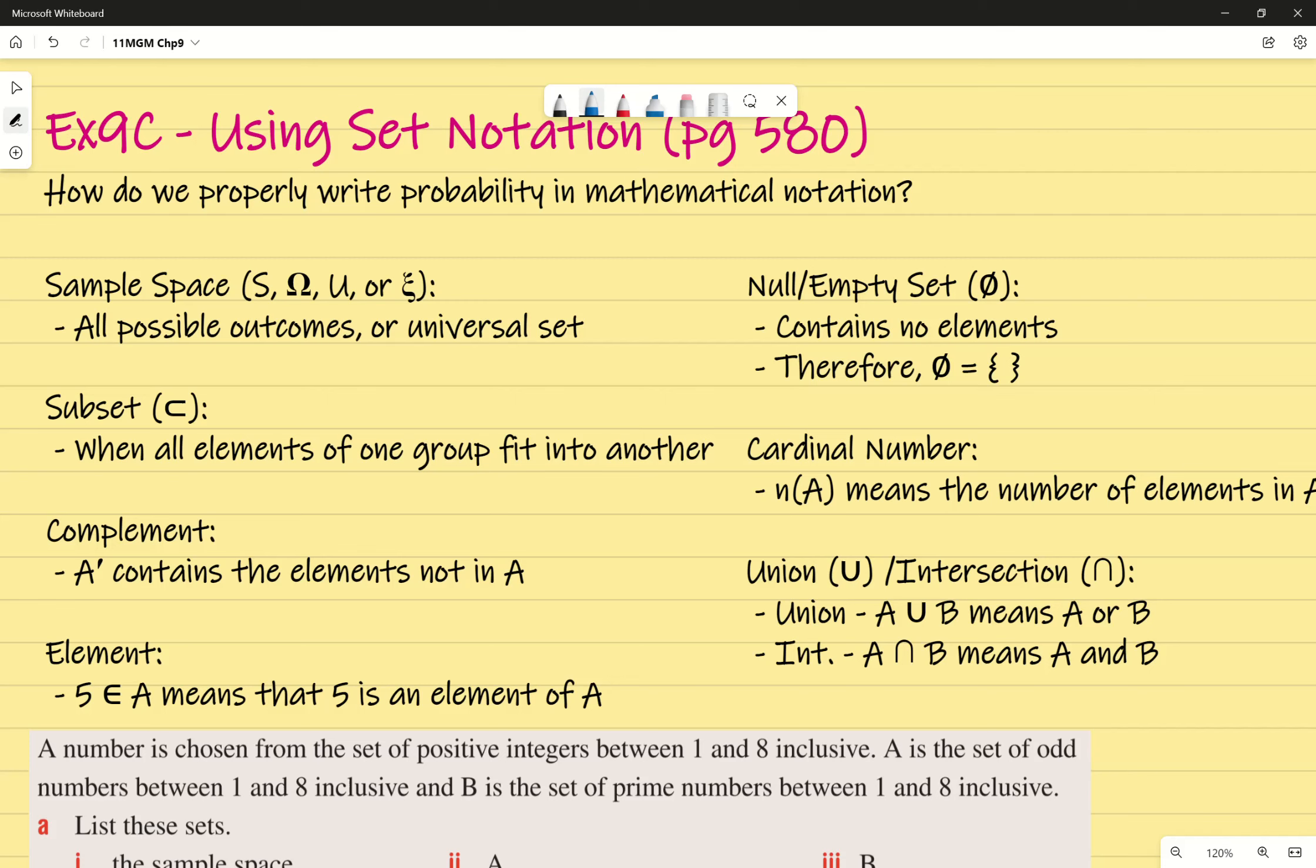Now the second one here is subset. This one should be new. The subset of something is represented by this sideways-looking U, and it just means when all elements of one group fit into another. So for example, if all of the numbers in group A fit into group B, you'd say that A is a subset of group B. And when I say elements, I want you to think of, for example, the numbers on a dice, or the heads or tails, or whatever it is.